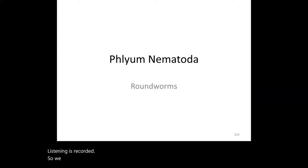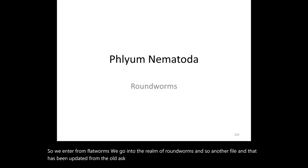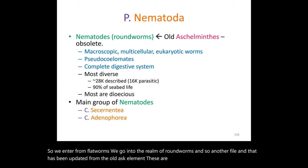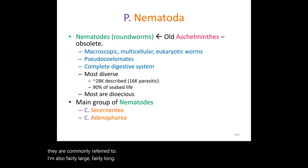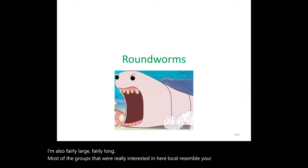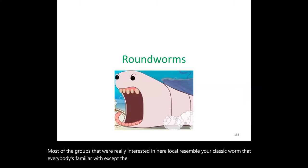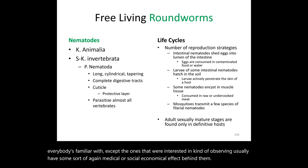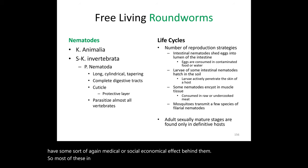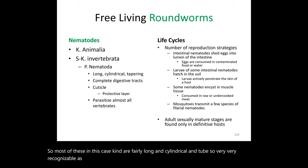From flatworms, we enter the realm of roundworms — phylum Nematoda, or nematodes as they're commonly referred to. This is also a fairly large phylum. Most of the groups we're interested in resemble your classic worm that everybody's familiar with — fairly long, cylindrical, and tube-like, so very recognizable as a worm.